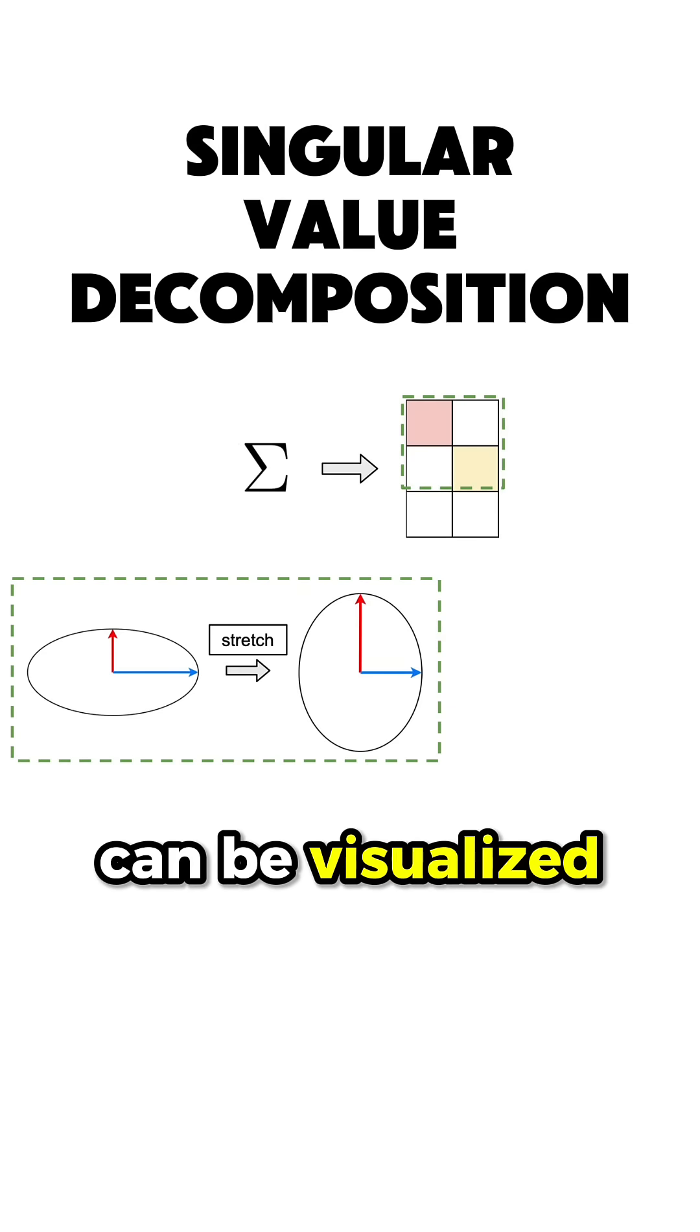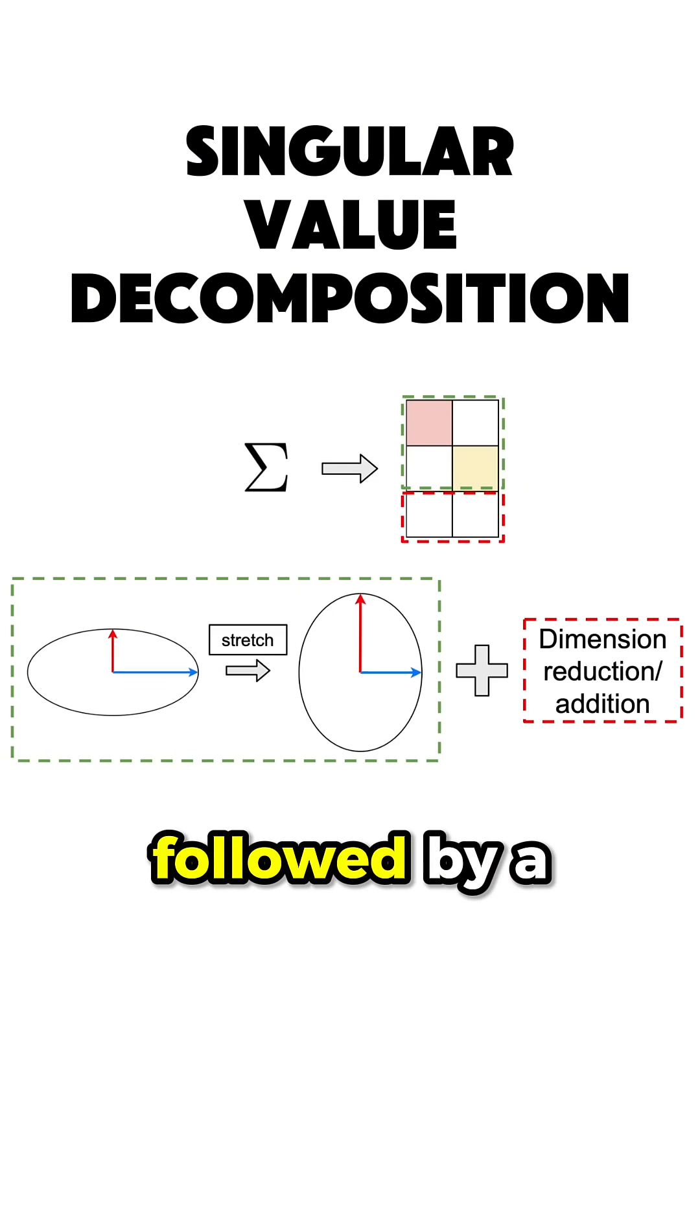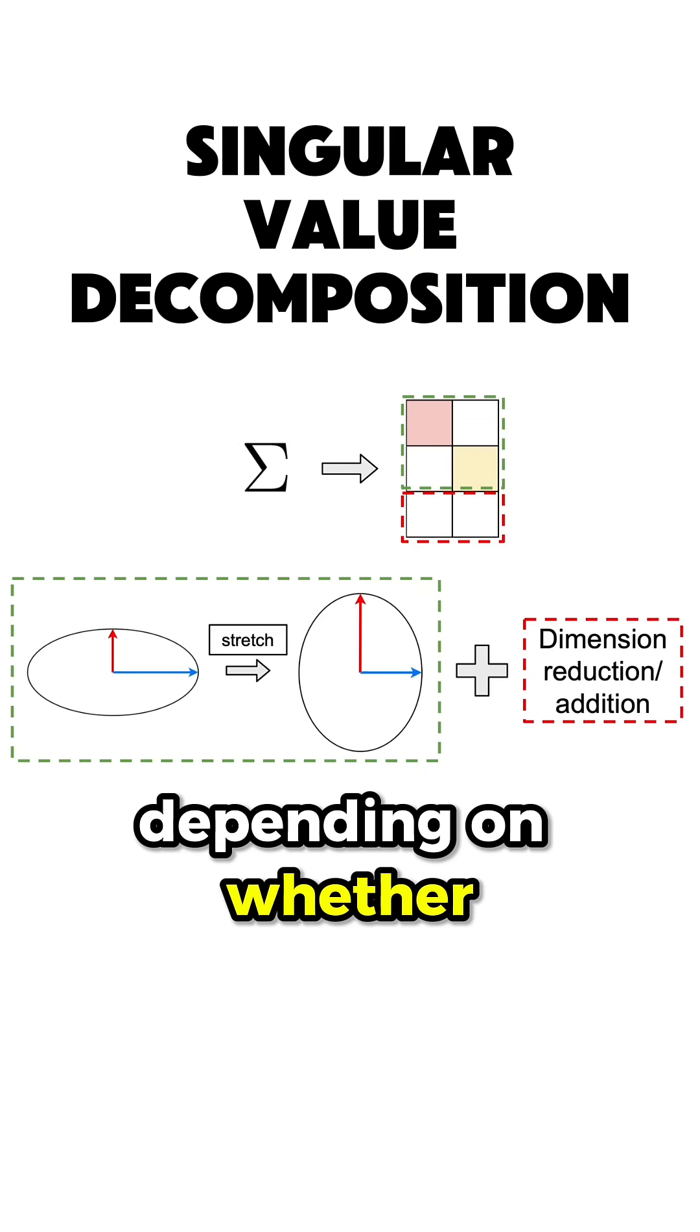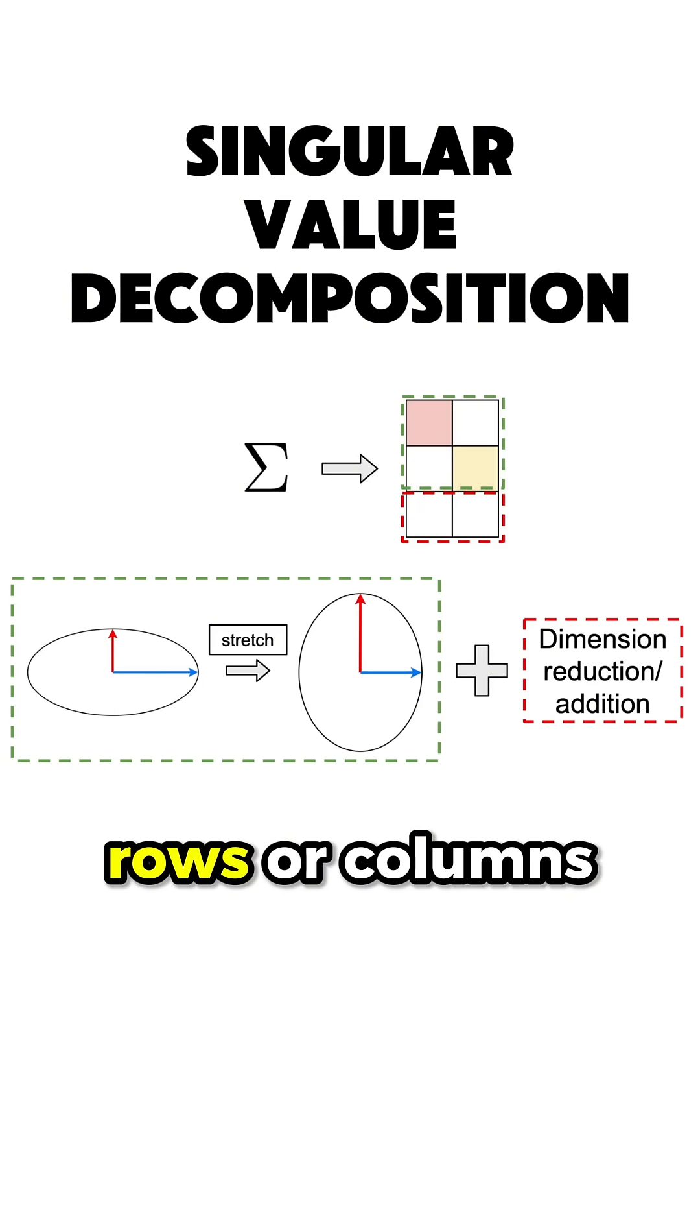Therefore, this matrix can be visualized as a stretch in the direction of singular values, but only up to a certain point, followed by a projection onto a lower or higher dimensional space, depending on whether the matrix A has more rows or columns.